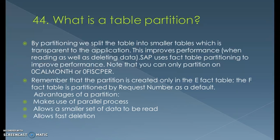You can only do partitioning if you have a field called 0CALMONTH or 0FISCYEAR / 0FISCPER — only if either of these two time characteristics exist can you create a partition. Note that partitioning is not available in BW/4HANA, also called BW on HANA. Table partitioning is no longer required for BW on HANA because HANA already has high performance, so you don't need to worry about performance issues. The partition is created only in the E fact table; the F fact table is partitioned by request number by default. Advantages of partitioning include: makes use of parallel processing, allows a smaller set of data to be recreated, and allows data deletion.